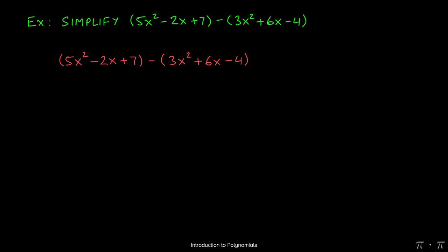we first have to distribute the negative into the terms on the right. When we do that, all the terms will have their signs flipped. So the positive 3x² would become negative 3x², the 6x will become negative 6x,